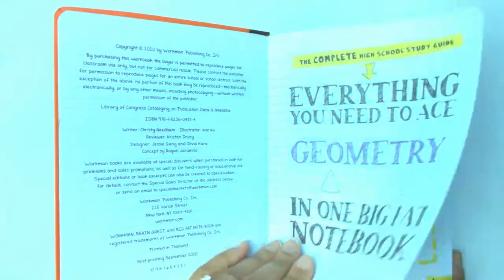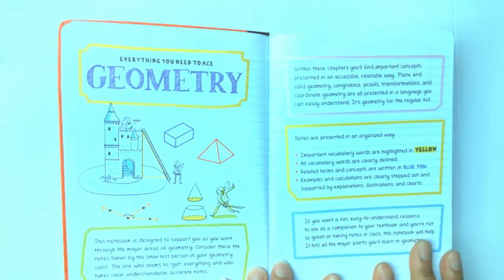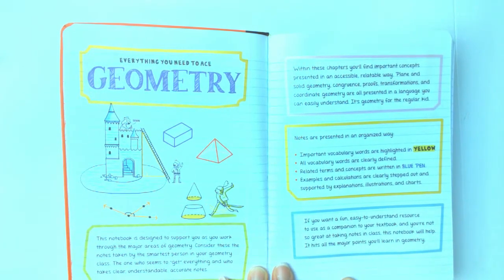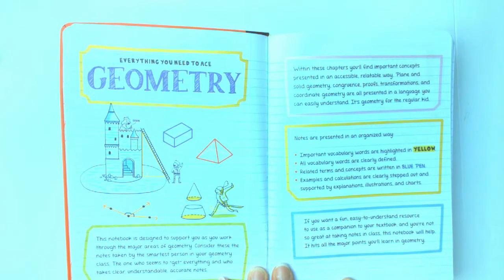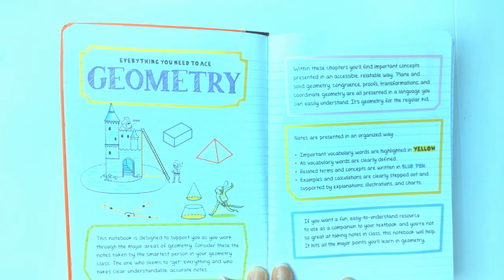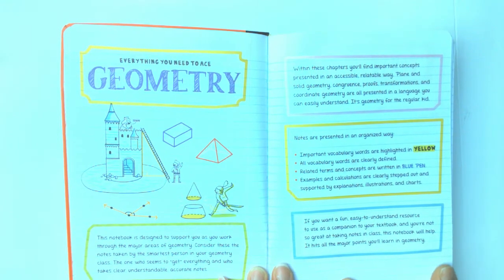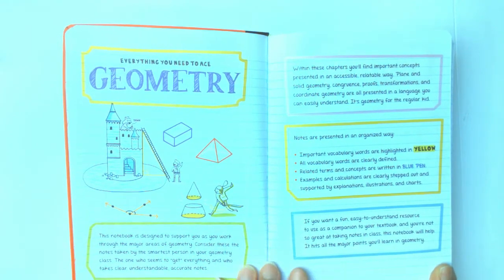We'll begin with the introduction. Notes are presented in an organized way. Important vocabulary words are highlighted in yellow. All vocabulary words are clearly defined. Related terms and concepts are written in blue pen.